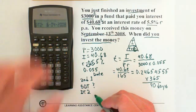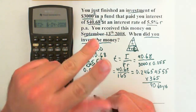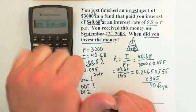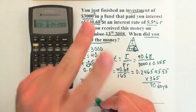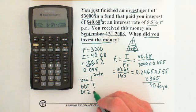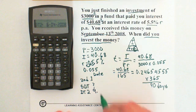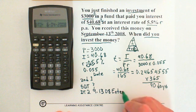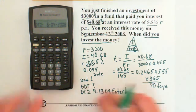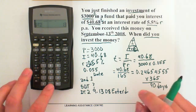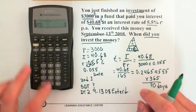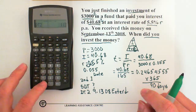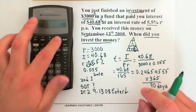September is January, February, March, April, May, June, July, August, September. September is the ninth month, so 9 decimal 13 08 enter.